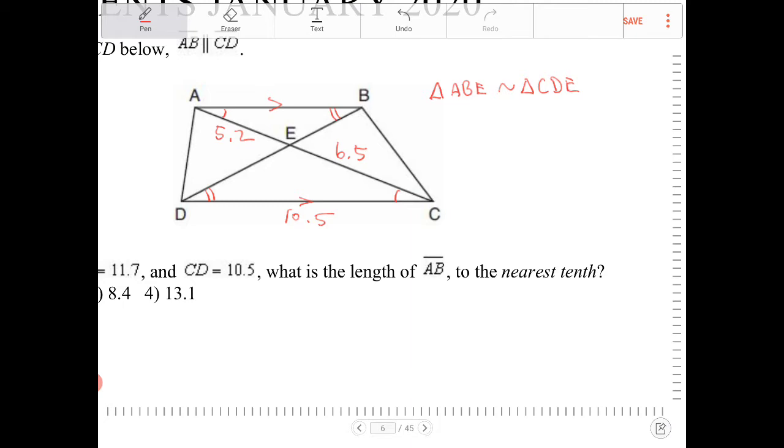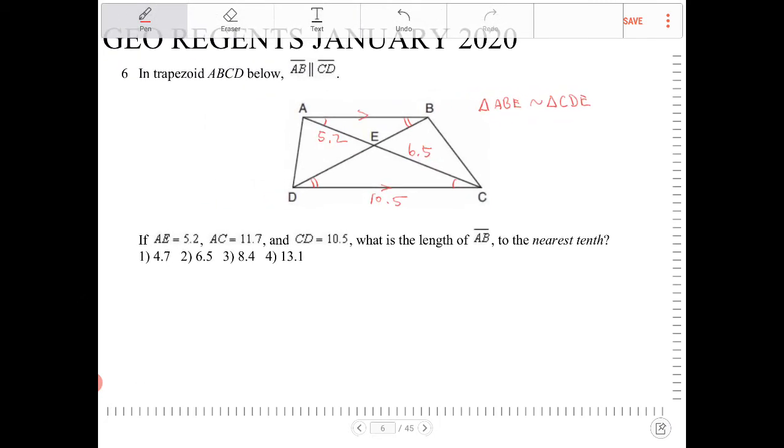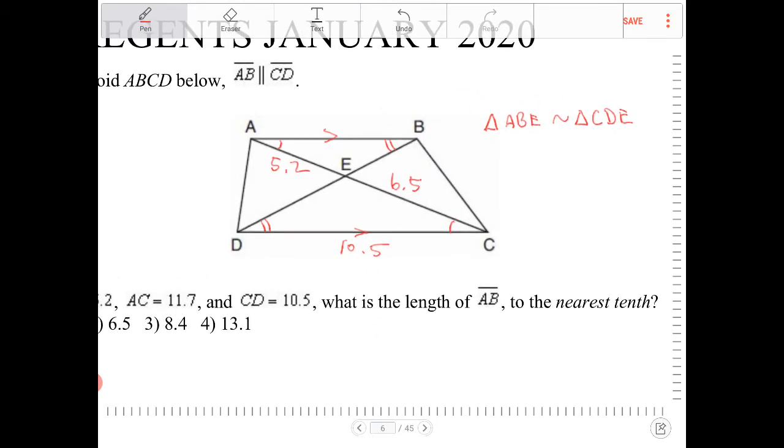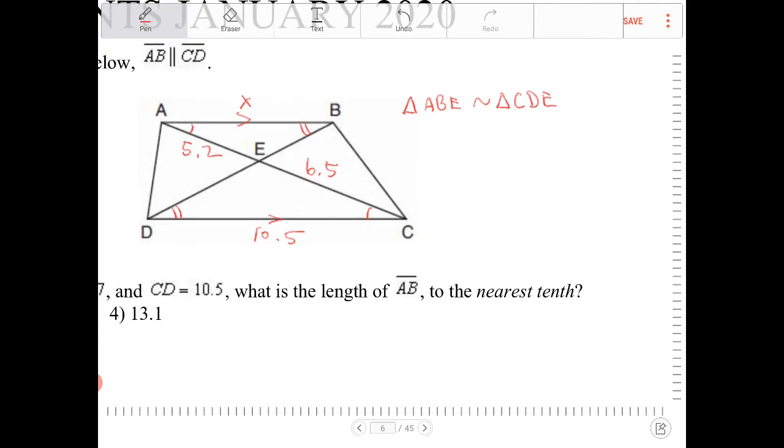So, I'm trying to figure out right now the length of AB, which I'm going to call X. So, I can say that the proportional sides, right, X is to 10.5, is to 5.2, is to 6.5.